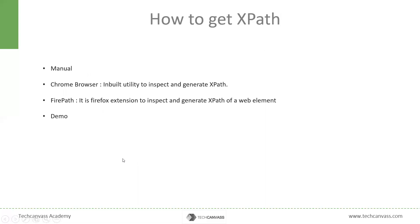Now let's see how we can generate the XPath. First is the manual way, as we have seen in the previous slide. But sometimes the HTML file is quite big or complex, and writing the XPath of each and every element manually would be quite a tedious task. In this case, there are certain utilities which can help us. For example, first is the Chrome browser, which has an inbuilt utility to inspect and generate the XPath. The second utility is FirePath, a Firefox extension which can be downloaded with Firefox. It also helps us to inspect and generate the XPath. Let us see the demo to get more clarity.